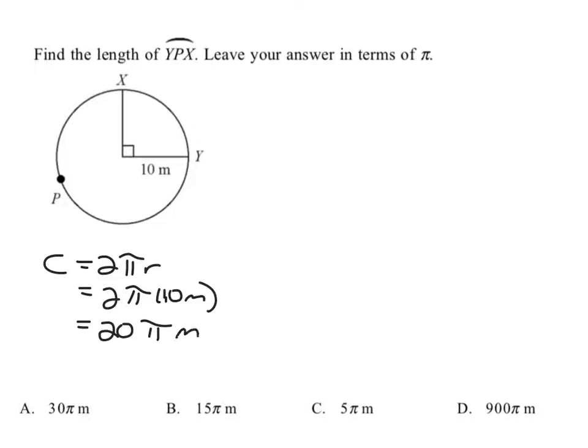And that arc length is 270 out of 360 degrees, or simplified becomes 3 out of 4. So that 3 out of 4 equals how much out of the entire circumference of 20 pi meters?